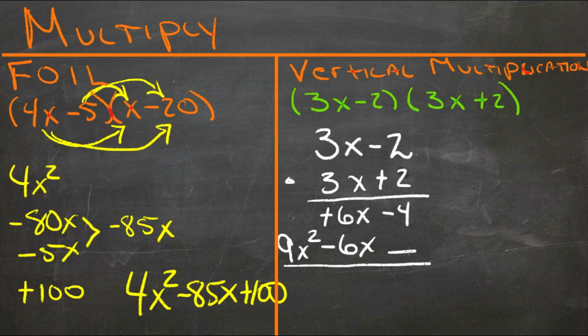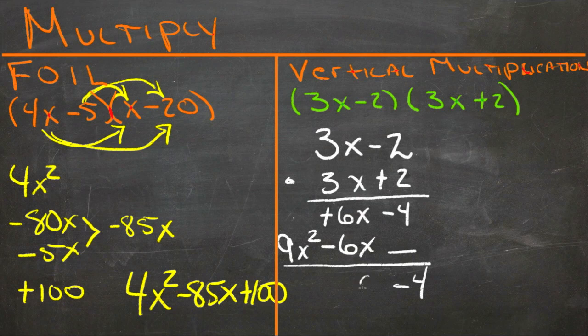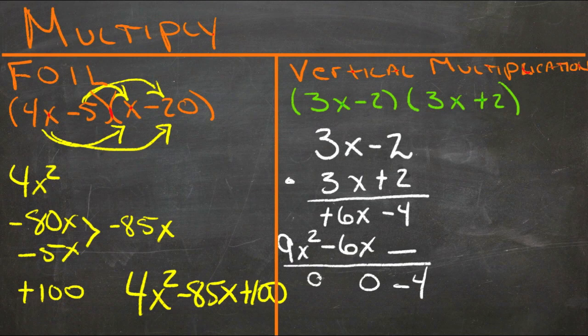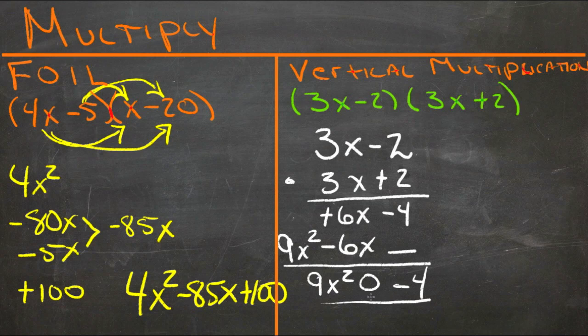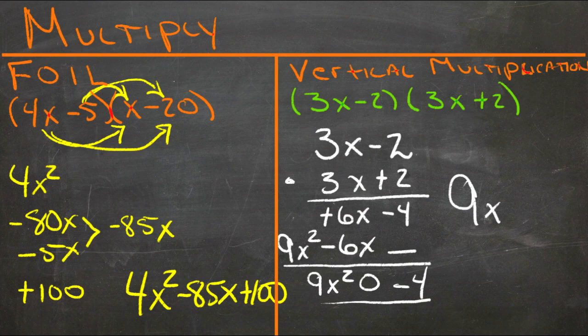And then we just add straight down. We have negative 4. We have 0. And we have 9x squared. So our final answer then, once everything is combined, is 9x squared minus 4.